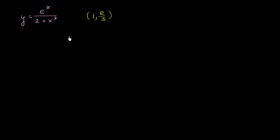The slope of the tangent line at this point is the same thing as the derivative at this point. So let's try to find the derivative of this function and evaluate it at this point. To do that, I'm going to rewrite it. You could use the quotient rule if you like, but I always forget the quotient rule. The product rule is much easier for me to remember.